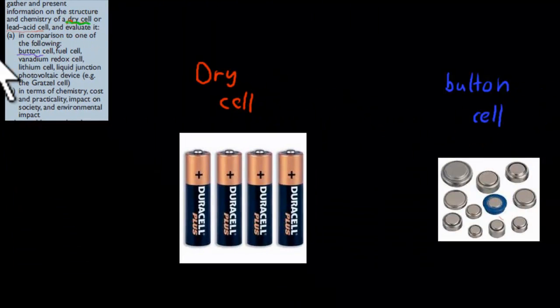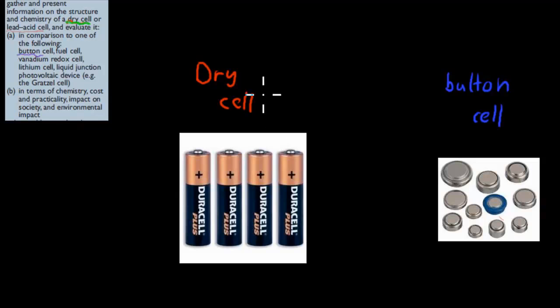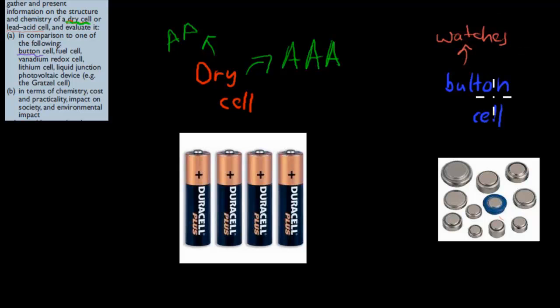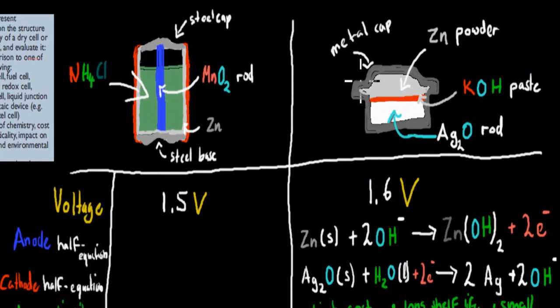Let's start with the dry cell — these are your AA or AAA batteries, the very widely used ones. The button cell refers to the smaller batteries usually used for watches and the like. I'll be drawing the insides of both batteries since we have to compare the chemistry.